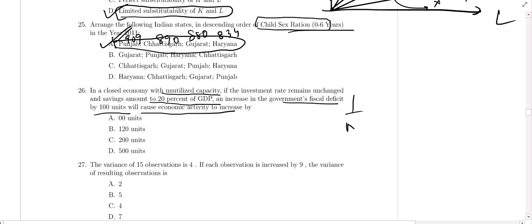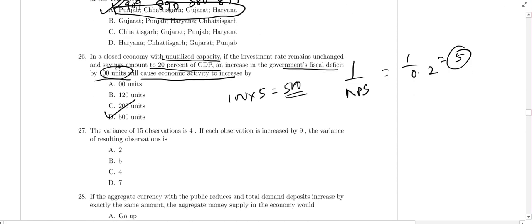Using the multiplier: 1 by MPS, which is 1 by 0.2 (20 percent), equals 5 times. Now 100 times 5 equals 500. Economic activity increases by 500, so the answer for 26 is D.